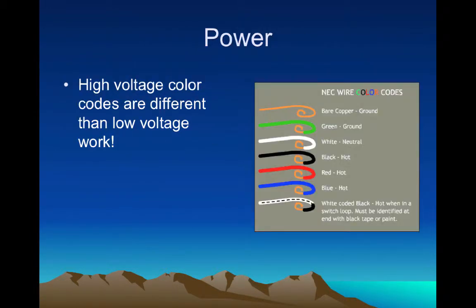It's important to note that the color coding for power is much different from our low voltage wiring. In mic cables you might see red and white and ground, or black and white and ground — it varies by manufacturer. But with power there really is a standard: black is always the hot. Red is also hot, and blue is also hot. In a three-phase system you'll see black, red, and blue as hot. In many homes, red can also be a switched hot for three-way switches. White is always neutral, and green and bare copper are always your safety ground.